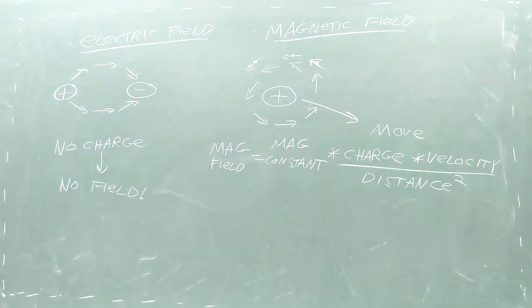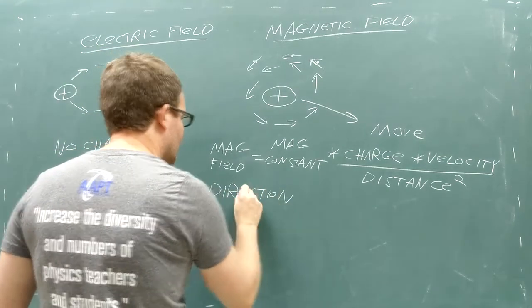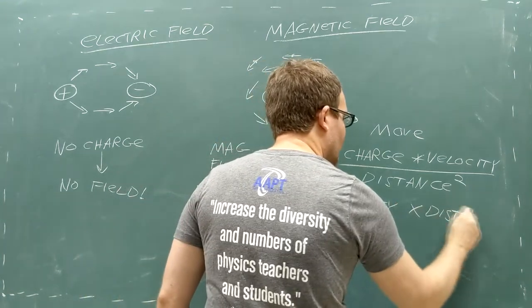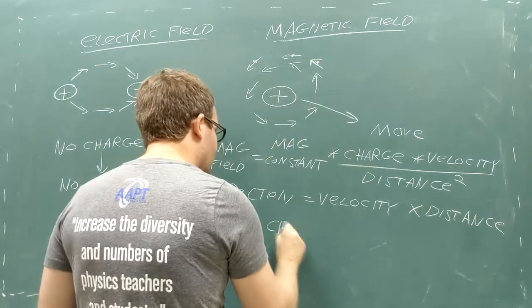Lastly, we need to determine the direction of the magnetic field at the observation point using a type of multiplication called the cross product. We're going to take the cross product of the particle's velocity with the direction from the charged particle to the field point.